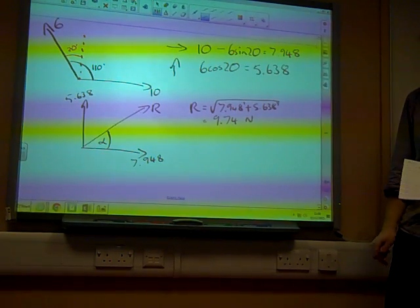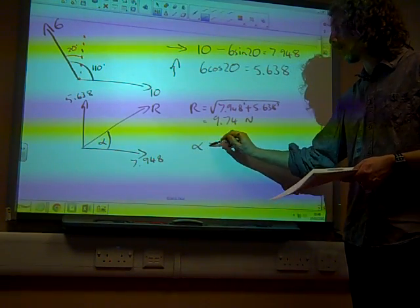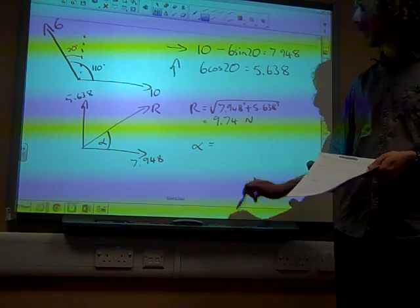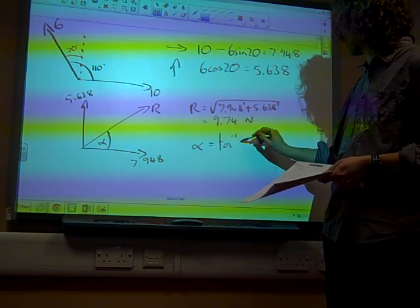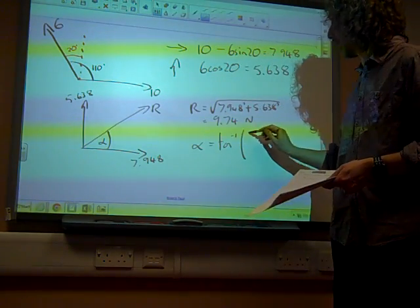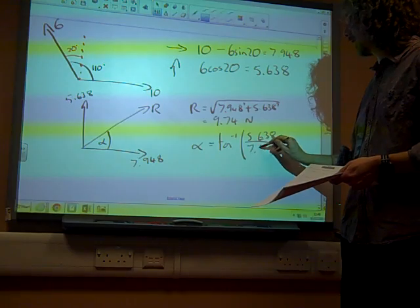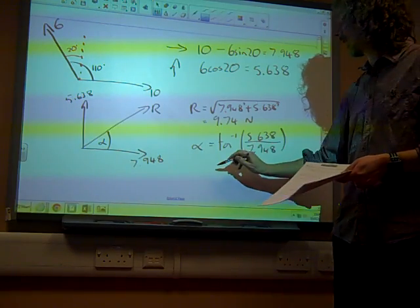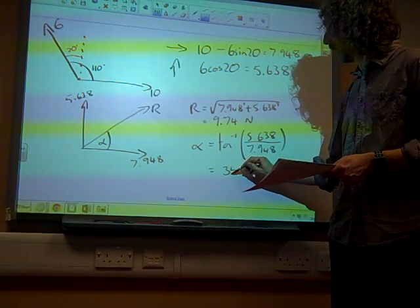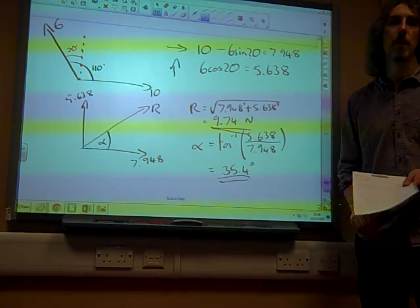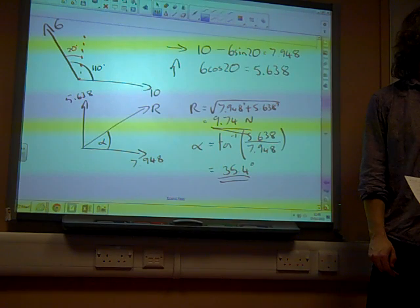And to work out my angle, my angle alpha, tan alpha is opposite over adjacent. So, the tangent of alpha, the inverse tan of alpha, is the opposite, which would be 5.638, over the adjacent, 7.948, which gives me alpha as being 35.4 degrees, again, to three significant figures. And that's how I would have done that.